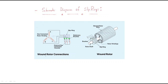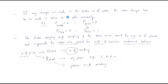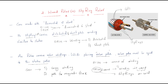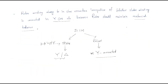Hello everyone. In this session we will discuss the schematic diagram of the slip rings. In the last session we discussed about the construction. Here this part is the slip ring spot, so these are the slip ring spots. We will discuss what inside connections are available for the slip rings and how practically the connections are made.